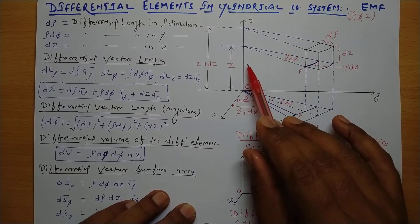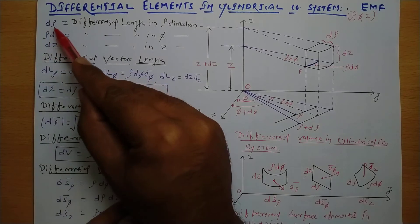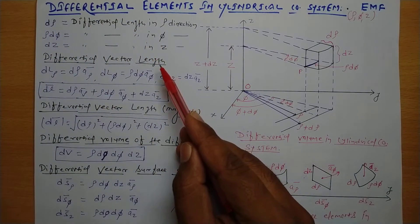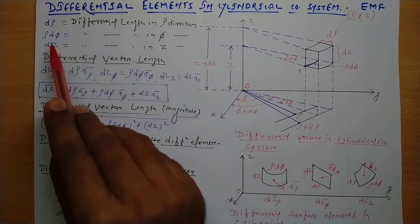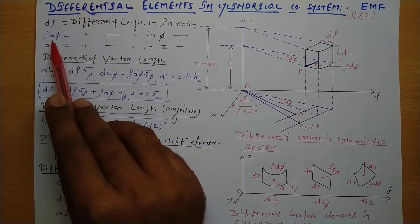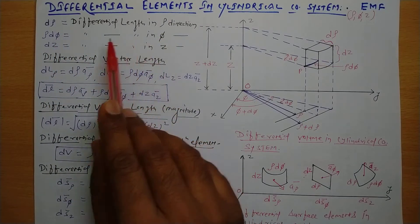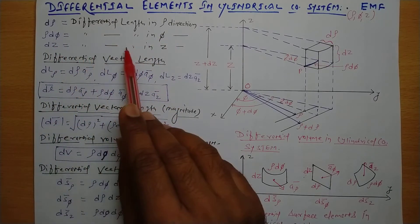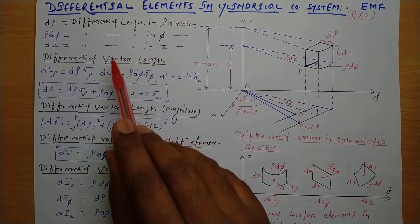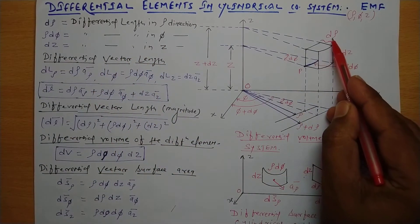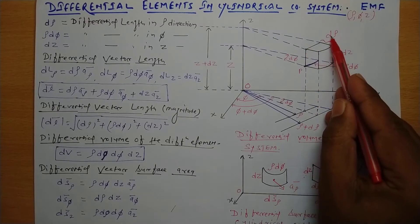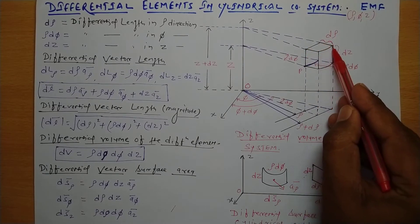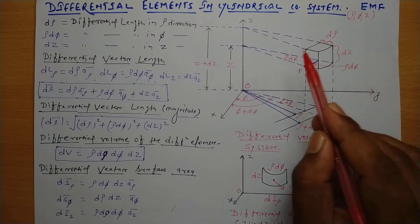The differential length in the rho direction is d rho. Rho d phi is the differential length in the phi direction, and dz is the differential length in the z direction. We will get the differential amount of rho — rho is the radius of a circular cylinder — so this will become d rho.